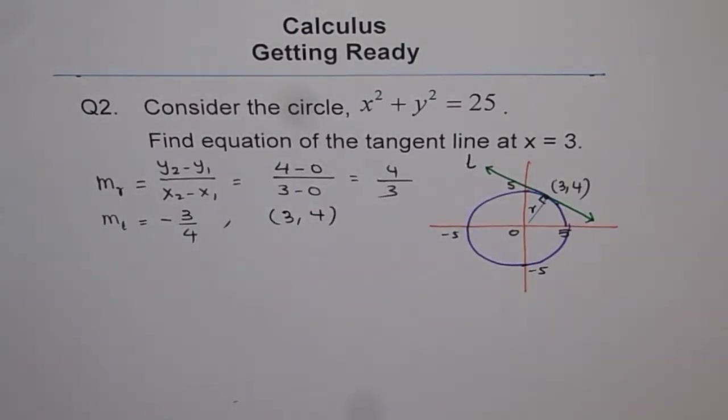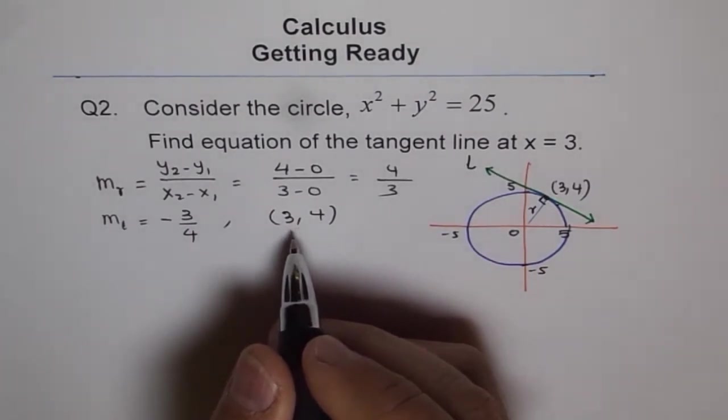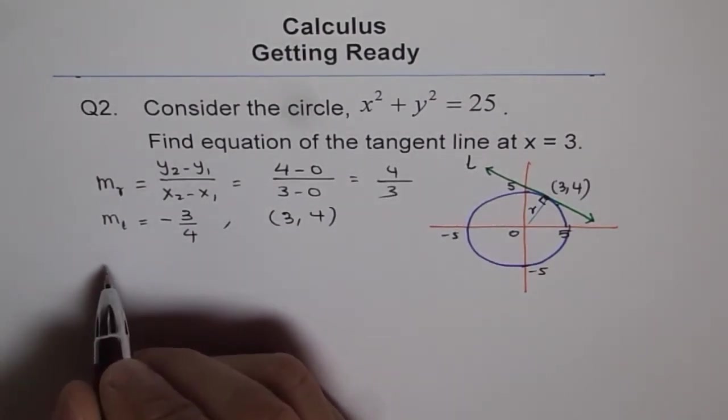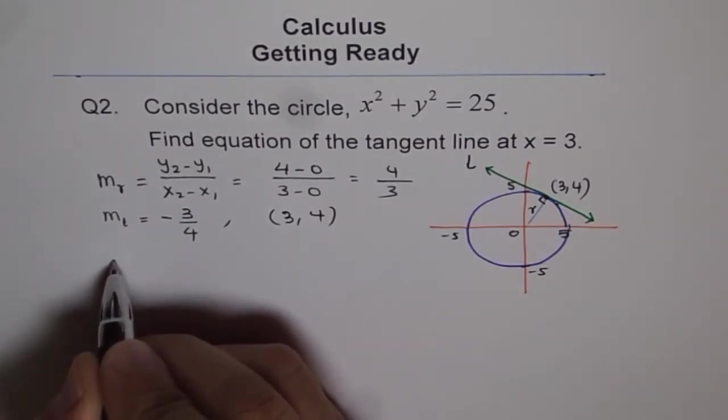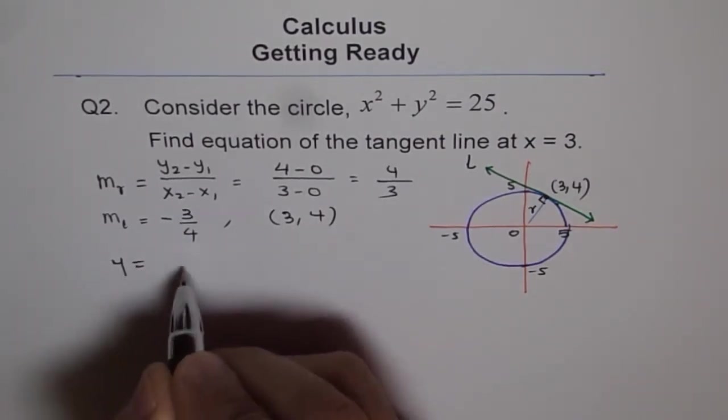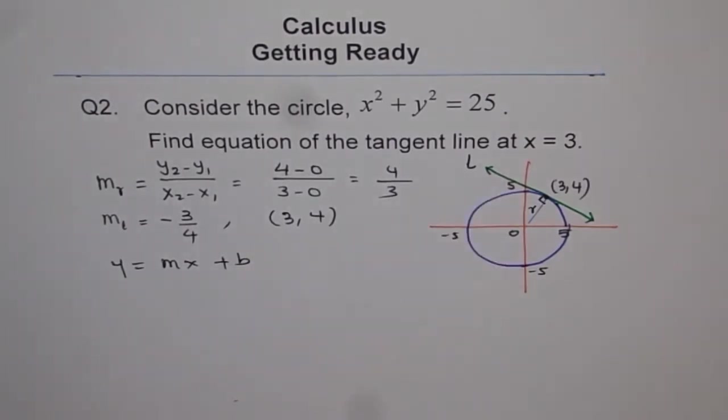So basically now we have to find equation of a line which has a slope of -3/4 and it passed through the point 3, 4. So you can use either Y = MX + B or the other equation to get the answer. So let us use Y = MX + B. So we will use Y = MX + B to get the equation of this tangent line.